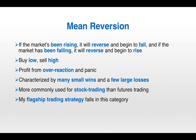Next we're going to look at mean reversion, the opposite of momentum. Mean reversion follows the assumption that if the market's been rising, it will reverse and begin to fall, and if the market's been falling, it will reverse and begin to rise. This is your classic buy low, sell high type of trading strategy. The idea is to profit from overreaction — large price moves that are going further than they really should. In contrast to momentum strategies, mean reversion strategies tend to be characterized by many small wins and a few large losses. Most of the time things do revert to the mean, so there will be a multitude of small wins that the mean reversion trader is hoping will dominate a handful of large losses.